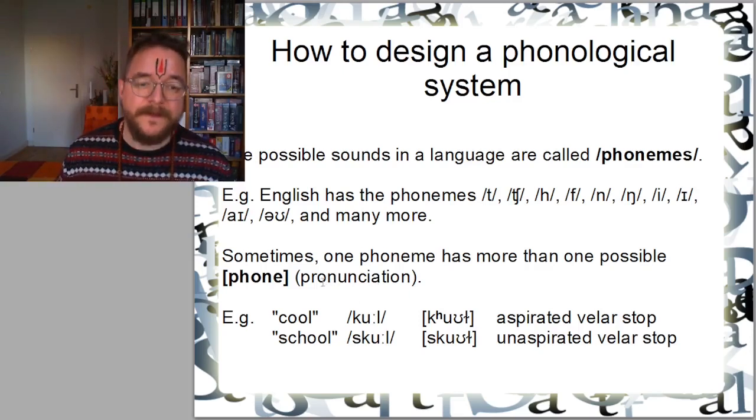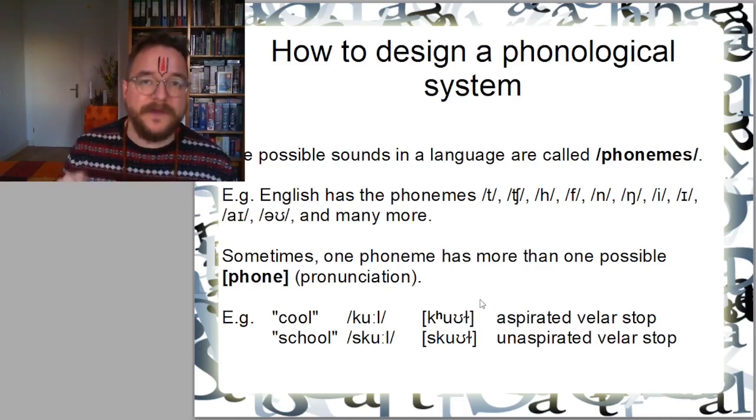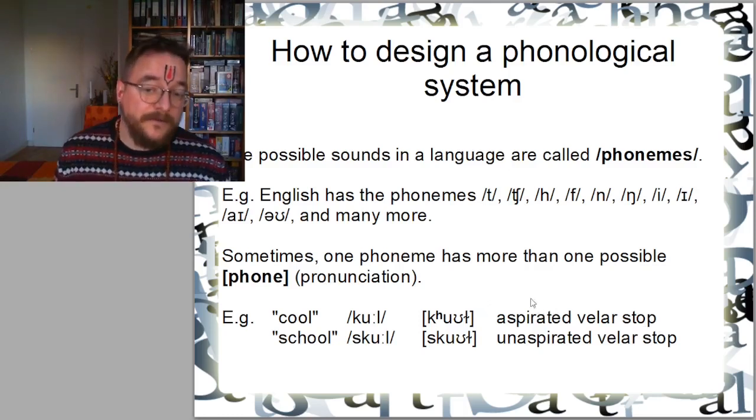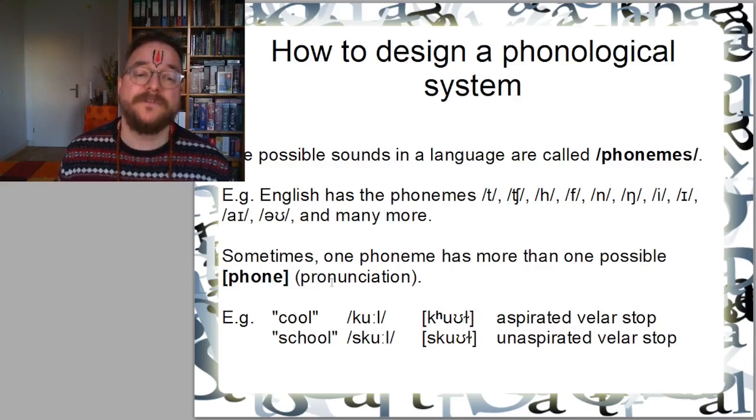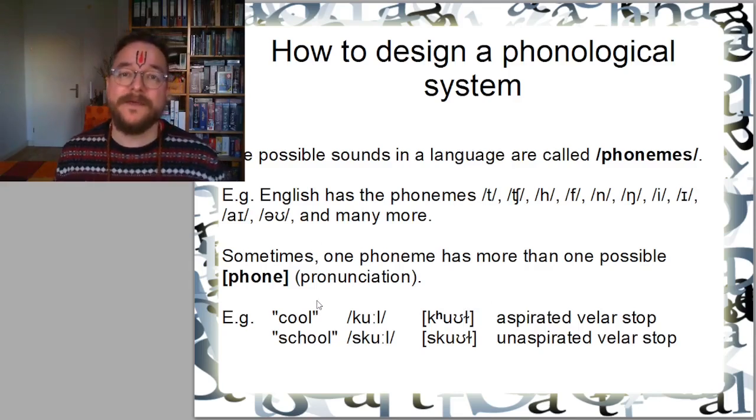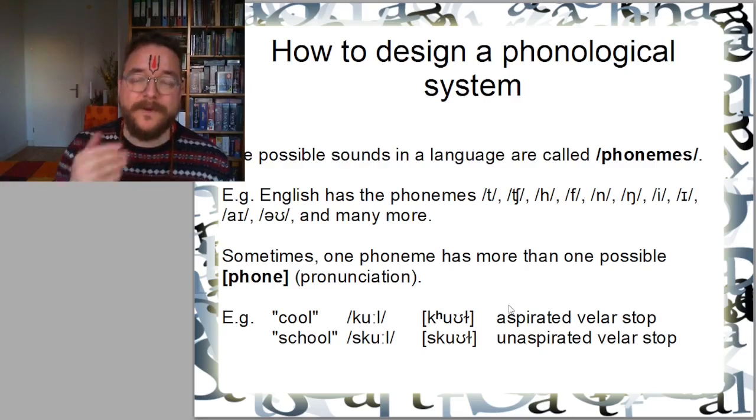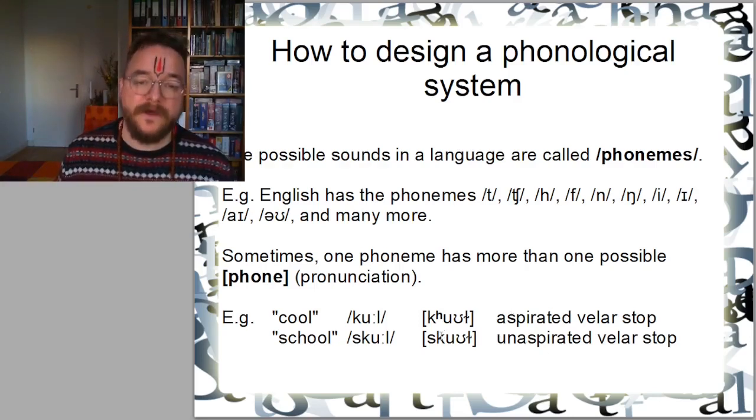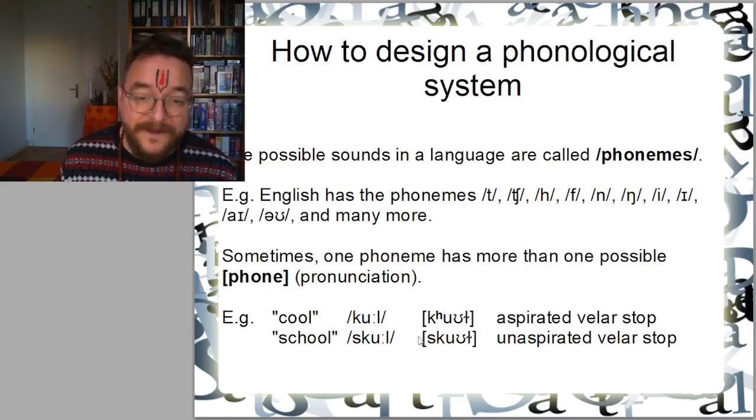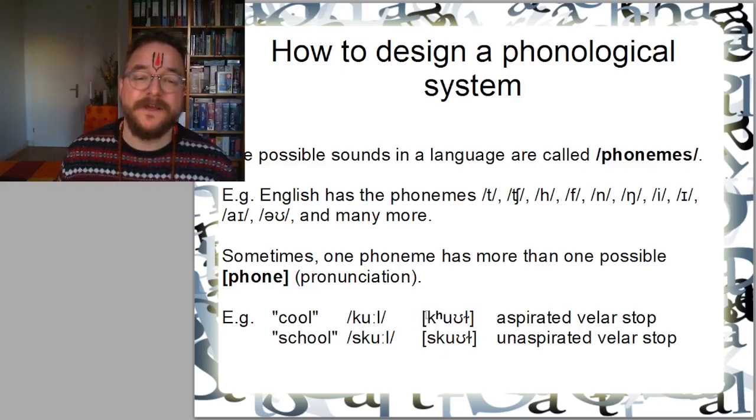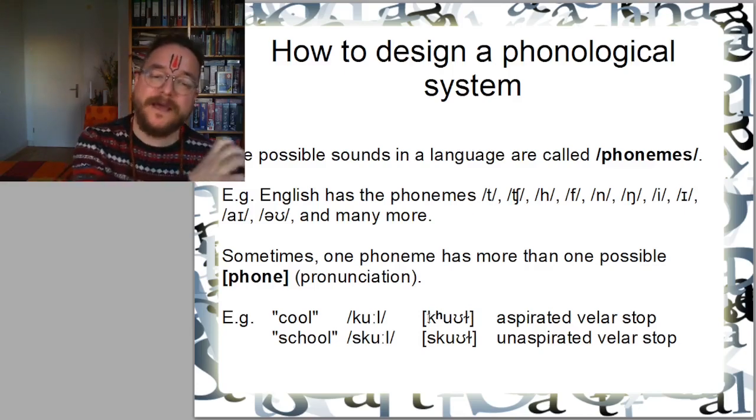I've given an example here of the velar stop, usually called a K or written with a K or a C. But probably many don't know that English has two possible pronunciations of K depending on where it appears. It has an aspirated form, which means it has an H directly after the K, and an unaspirated form without the H sound. Here you see two examples. One is the word cool, the other word is school.